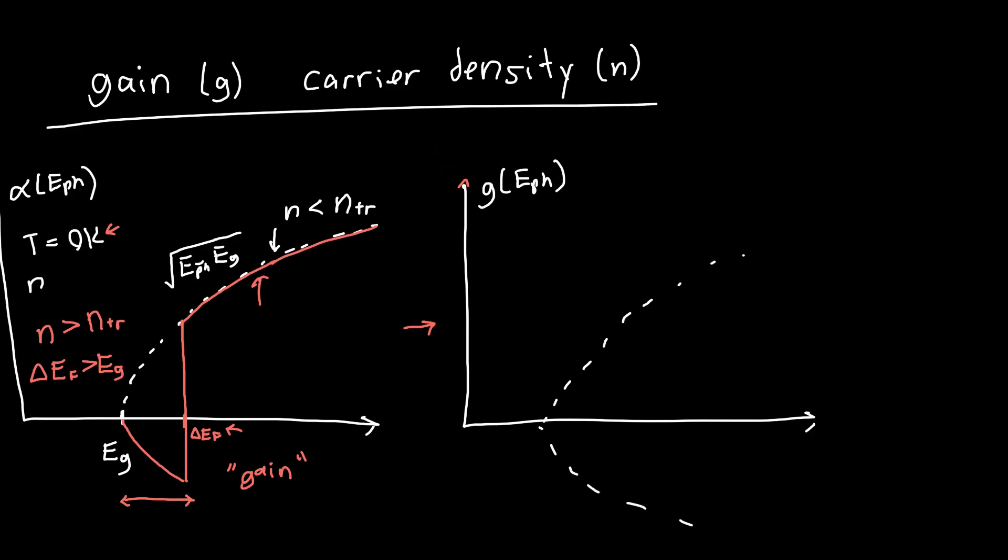So we'll still draw these asymptotes, these envelopes as we call them, but instead our spectra for carrier density greater than the transparency carrier density looks like this, so it's just been inverted. We prefer to deal with the gain because it's a positive quantity when our laser is operating properly. This line is our carrier density is less than the transparency carrier density, and this is when it's greater than the transparency carrier density.